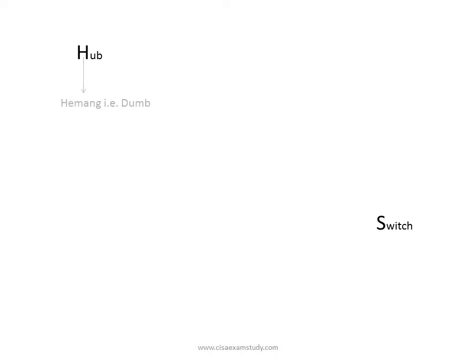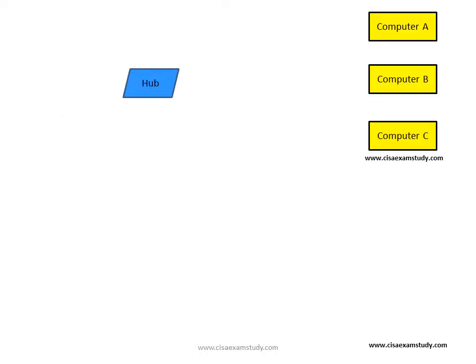Now let us understand about two important devices: hub and switch. For exam purpose, remember this — H stands for hub, which is dumb, and switch stands for smart. Hub is a dumb device; switch is a much smarter version of hub. Let us understand how hub is dumb and switch is smarter.